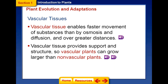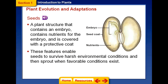Another feature is seeds. The majority of plants can reproduce by making seeds — a plant structure that contains an embryo and nutrients to protect it, so that when conditions are favorable it can grow.